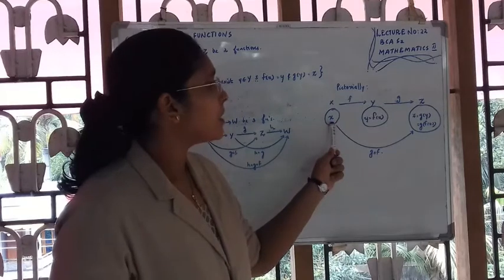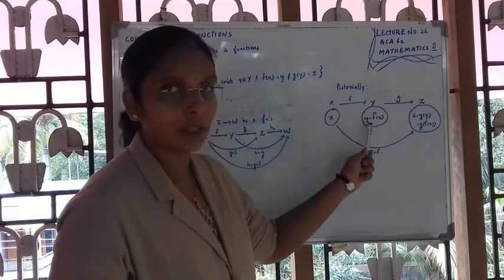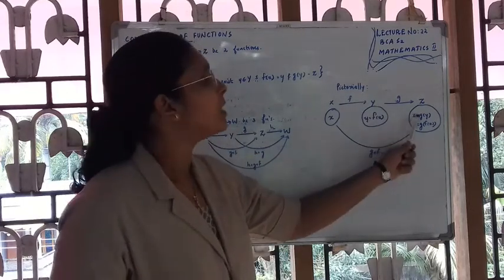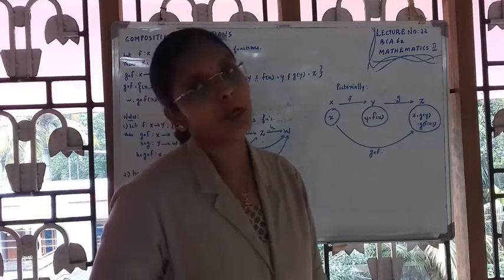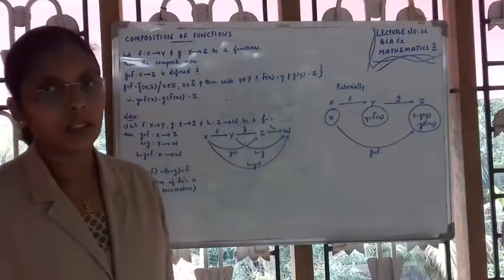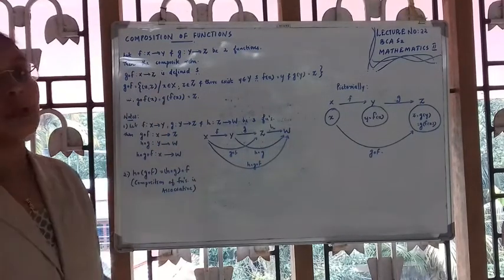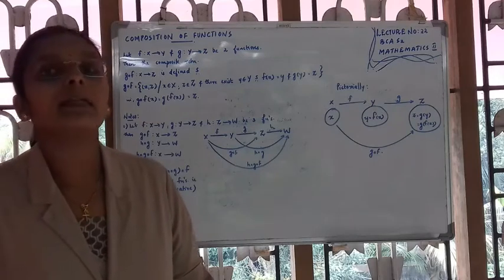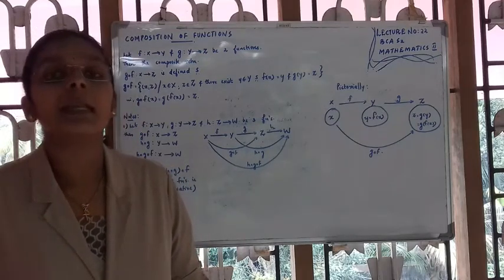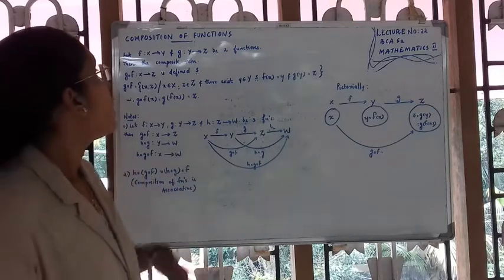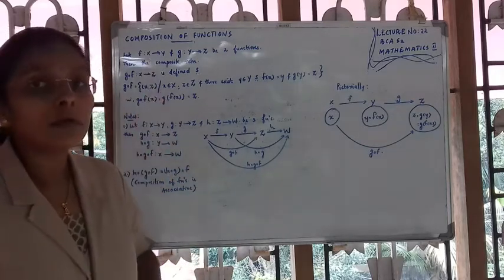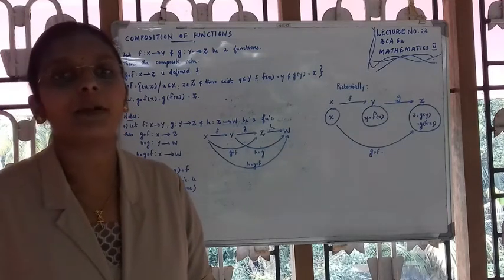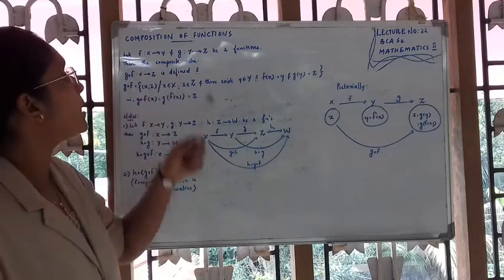So X maps to Y, defined by Y is equal to f of X, and Y maps to Z, defined by Z is equal to g of Y. That's the pictorial representation. We can find the pictorial representation. The composition function G1, that is the composition function — the composite relation defined as Z, the composite relation.